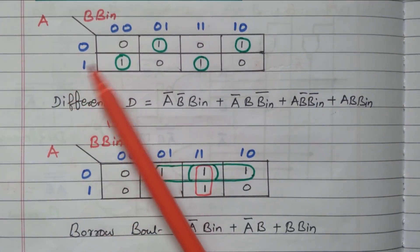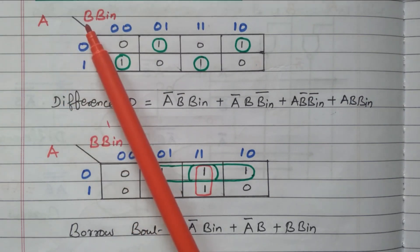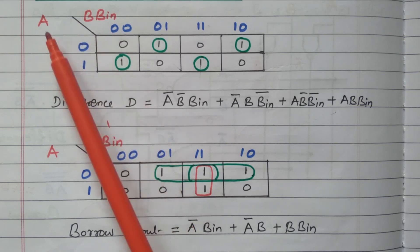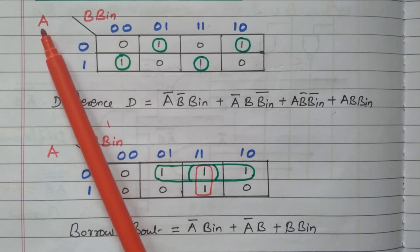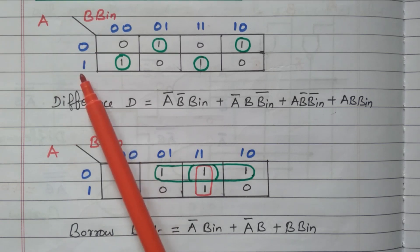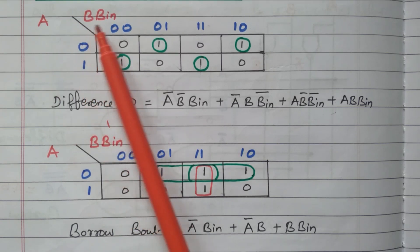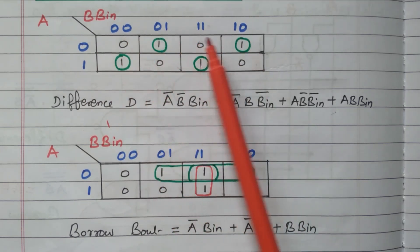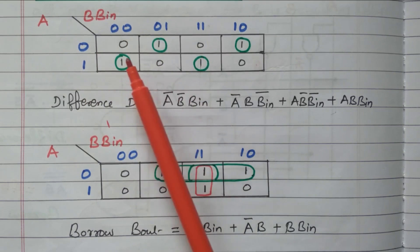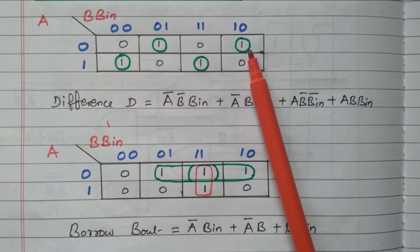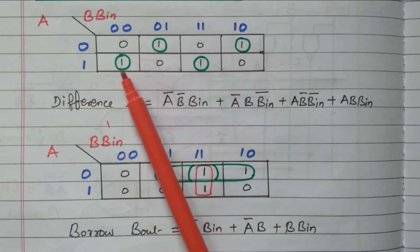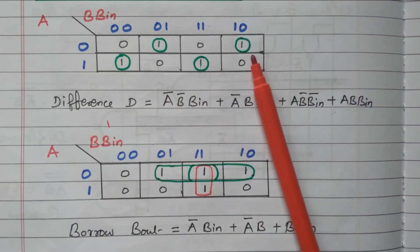In this K-map, the inputs are A, B, and Borrow-In. A is available vertically with two combinations — 0 and 1. B and Borrow-In together give four combinations: 00, 01, 11, 10. In the truth table, there are four 1s marked for difference; all four 1s are available individually with no possibility of grouping.